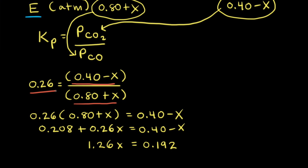Our next step is to solve for X. We multiply both sides by 0.80 plus X and do some algebra, getting down to 1.26X is equal to 0.192. So 0.192 divided by 1.26 is equal to 0.15, so X is equal to 0.15.